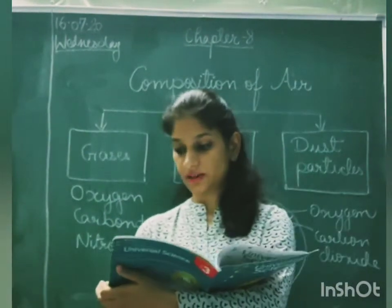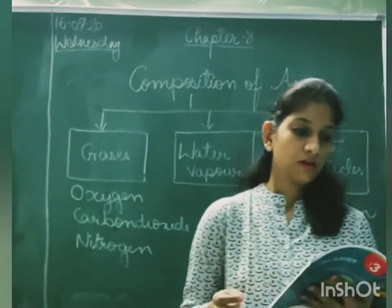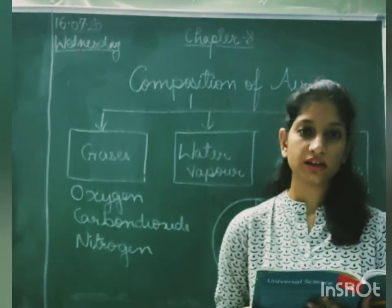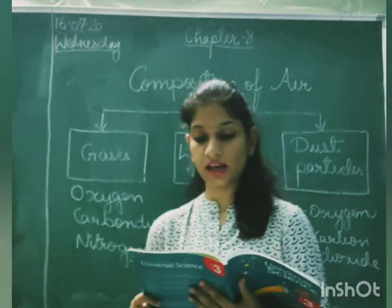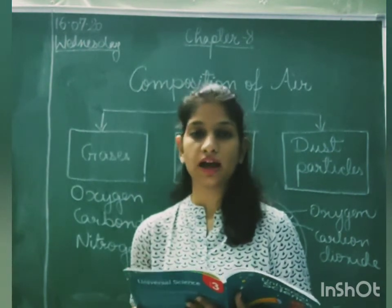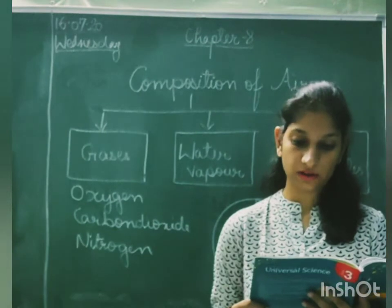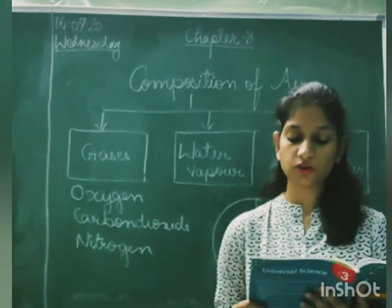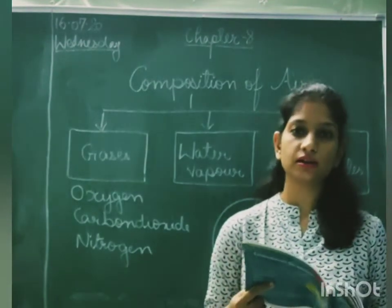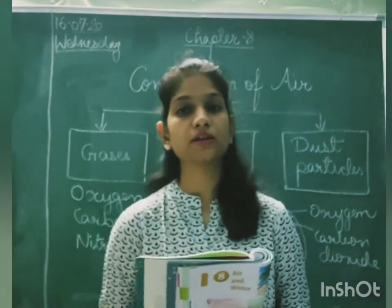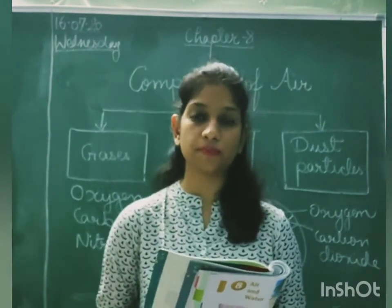Now please open page number 73 of your book so we can read it. What does air contain? Number 1 — Gases. Air is a mixture of gases such as nitrogen, carbon dioxide, oxygen and other gases. All living things need oxygen to live. Carbon dioxide is used by plants to prepare food — we have studied this in chapter 2.